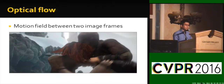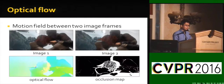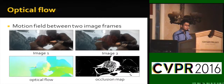Motion field between two image frames. Each frame in the Sintel dataset is the visualization of optical flow between frames — this is the motion map. Notice that some pixels show the motion of occluded pixels.